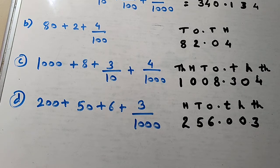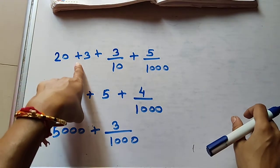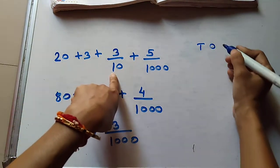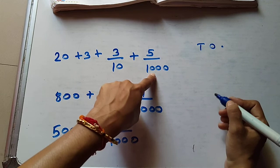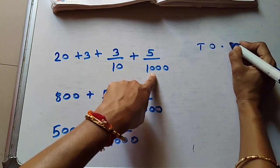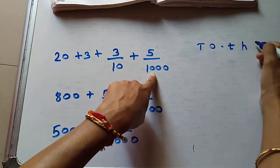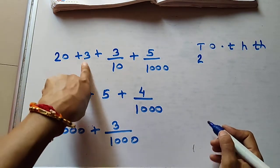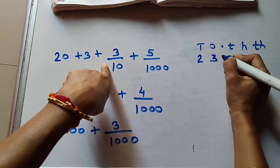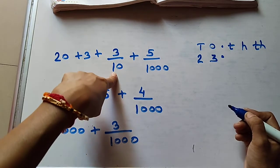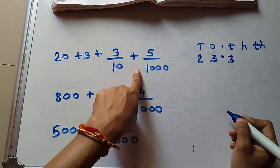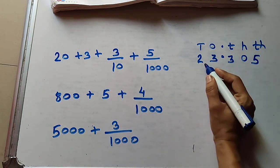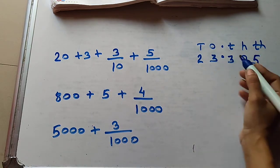Now see one more example. The greatest whole number place is the tens place — 20 means 2 tens. Write ones and tens. After the decimal point, up to thousandths: tenths, hundredths, thousandths. 20 means 2 tens, 3 ones. Decimal point. 3 tenths place means 3. No hundredths place so write 0. Thousandths place is 5. So the number is 23.305.